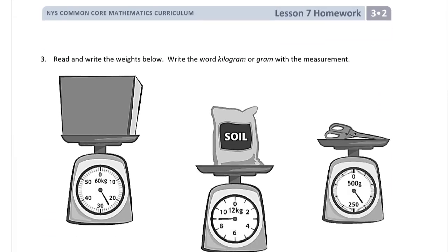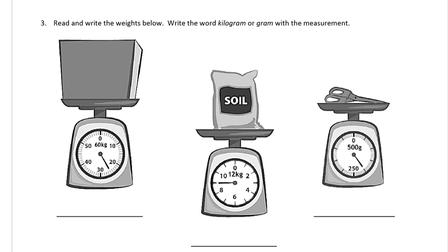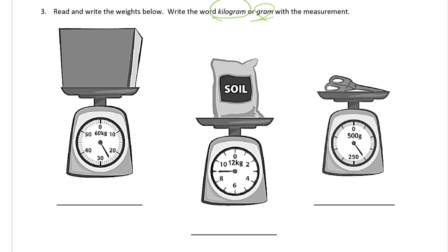Here's the next page. Read and write the weights below. Write the word kilogram or gram with the measurements. You have to write out the whole word, you can't just write kg or g. This is about practicing writing the names for the units. You want to know how to spell them, you have to practice writing.